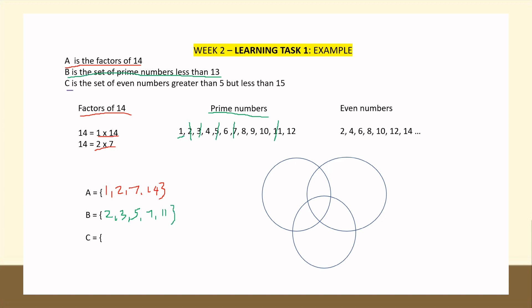For Set C, the set of even numbers greater than 5 but less than 15. Even numbers are 2, 4, 6, 8, and so on. Greater than 5 gives us starting from 6, and less than 15 means up to 14. So the even numbers are 6, 8, 10, 12, and 14. Therefore, the elements of Set C are 6, 8, 10, 12, and 14.